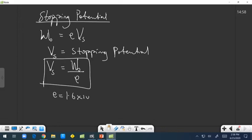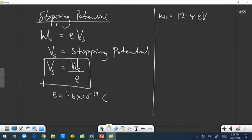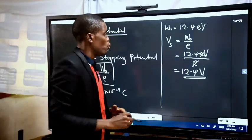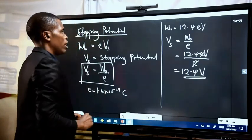The electronic charge E = 1.6 × 10⁻¹⁹ coulombs. Given that the work function of a metal is 12.4 electron volts, we can determine the stopping potential using Vs = W₀ / E. So Vs = 12.4 eV / E. The electron-volt units cancel with the electronic charge, giving Vs = 12.4 volts. That is the stopping potential for a metal where the work function is 12.4 electron volts.